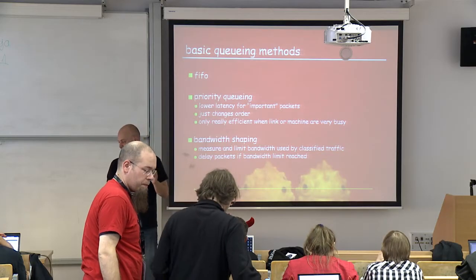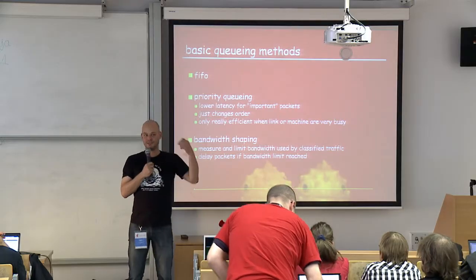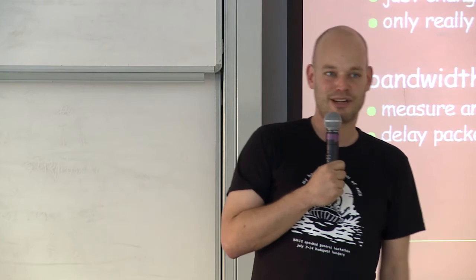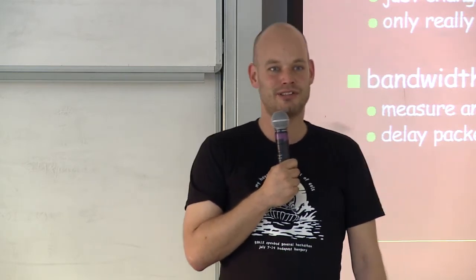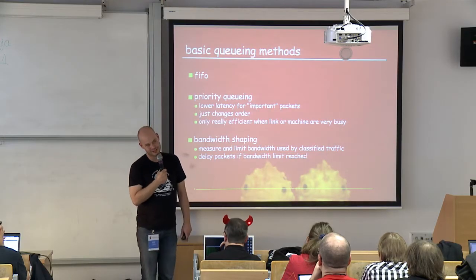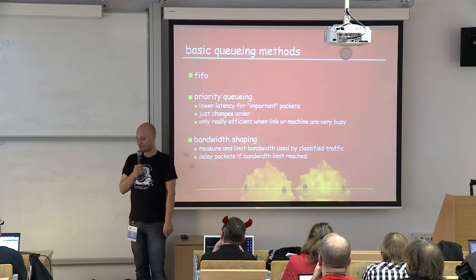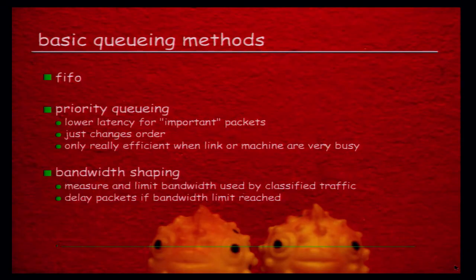One very important thing: you must never ever reorder packets that belong to a single TCP stream, because TCP doesn't like reordering. The other queuing method we care about is bandwidth shaping. You have a gigabit link but your uplink is only a few megabits and you don't want a neighbor or customer to use up all your bandwidth. Bandwidth shaping is more complicated — we have to measure bandwidth for certain classes of packets, classify packets, and if we reach the bandwidth limit for a class, delay those packets.